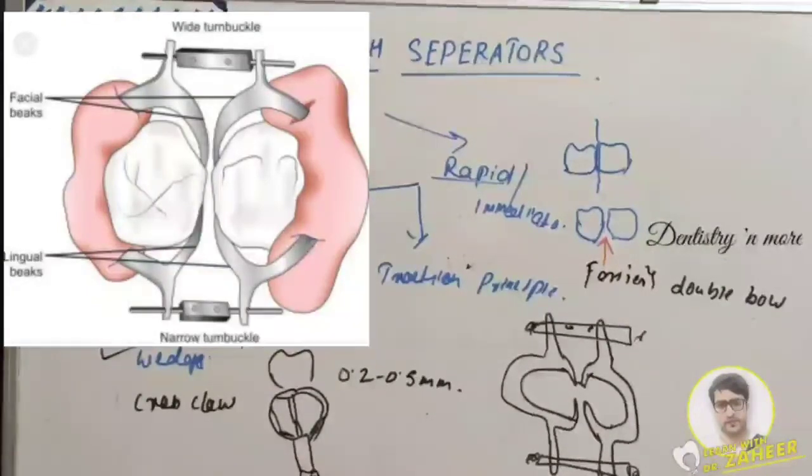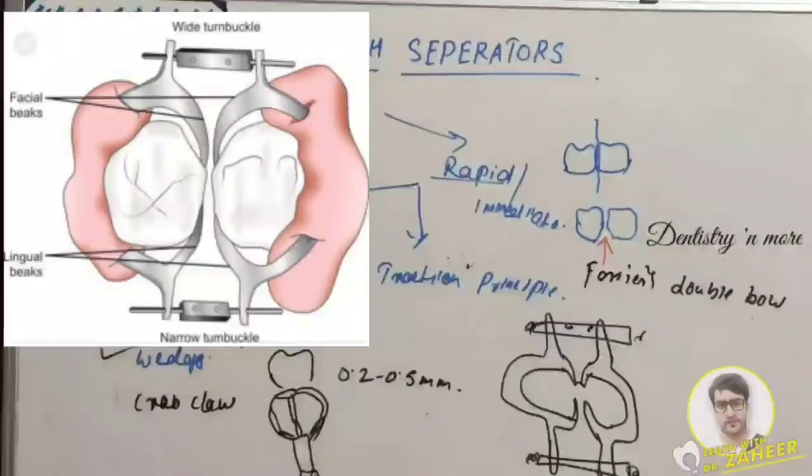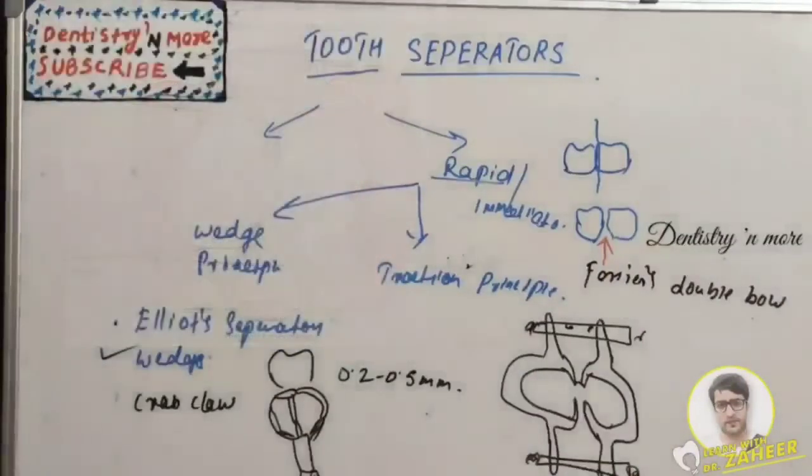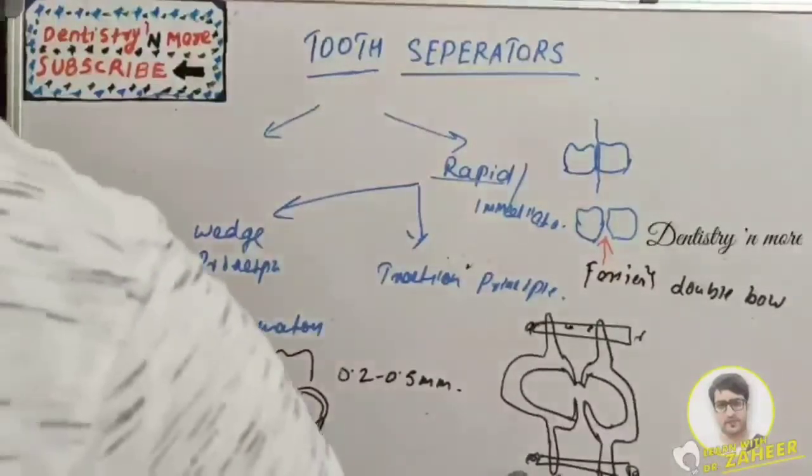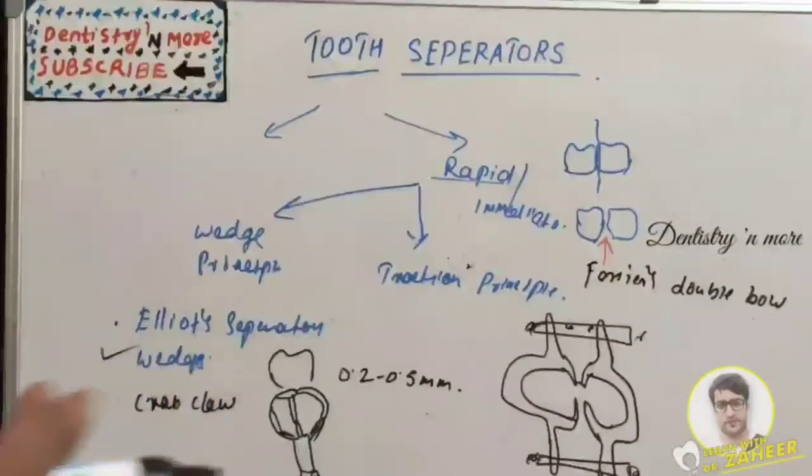Impression compound is used to stabilize the bows on the teeth. Separation is achieved at the expense of both the contacting teeth rather than one tooth. Tooth preparation, finishing, and polishing of Class 3 direct gold restorations all can be performed by using Ferrier's double bow traction tooth separator.